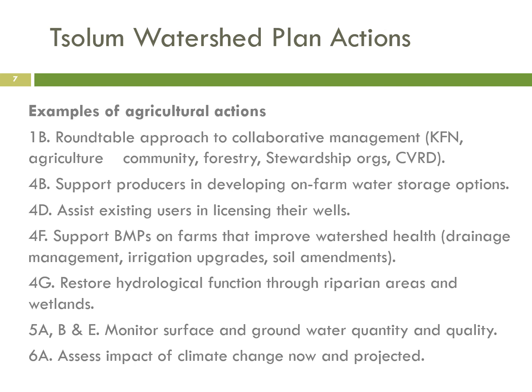Here are some examples of specific actions embedded within those key areas. Action 1B is to take a roundtable approach to collaborative management including Comox First Nations, the agricultural community, forestry stewardship organizations, and the regional district. Action 4B is to support producers in developing on-farm water storage options. Action 4D is to assist existing users in licensing their wells. Action 4F is to support beneficial management practices on farms that will improve watershed health, such as drainage management, irrigation upgrades, or soil amendments. Action 4G is to restore hydrological function through riparian areas and wetlands. Actions 5A, B, and E relate to monitoring surface and groundwater quality and quantity. And action 6A is to assess the impact of climate change, both now and in the future.